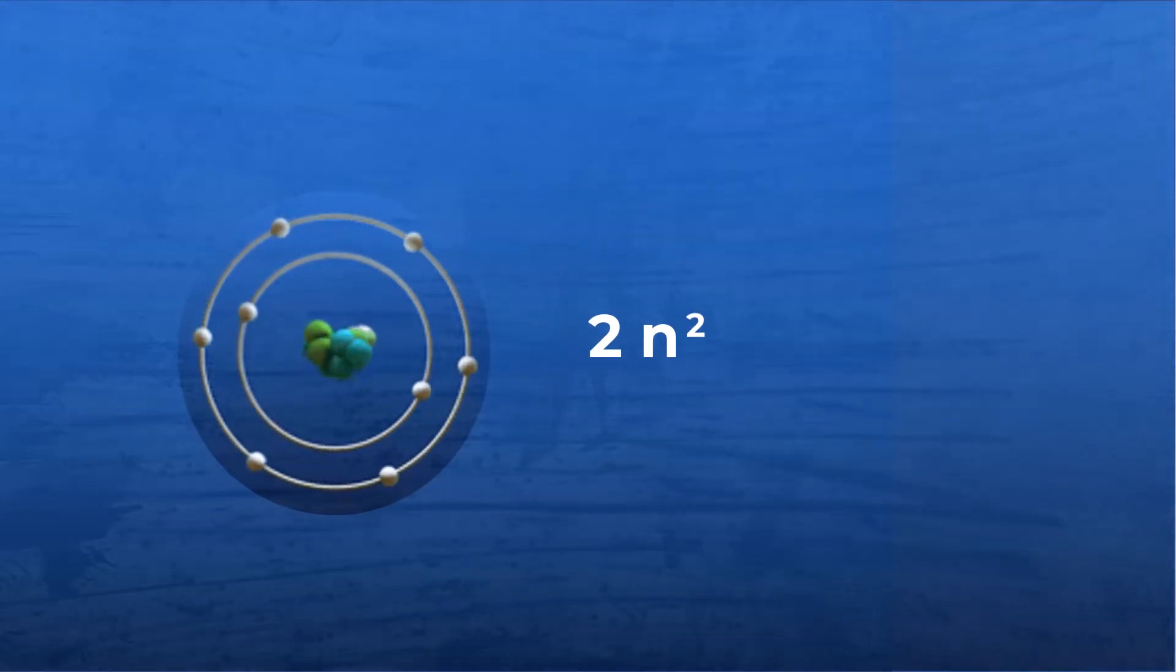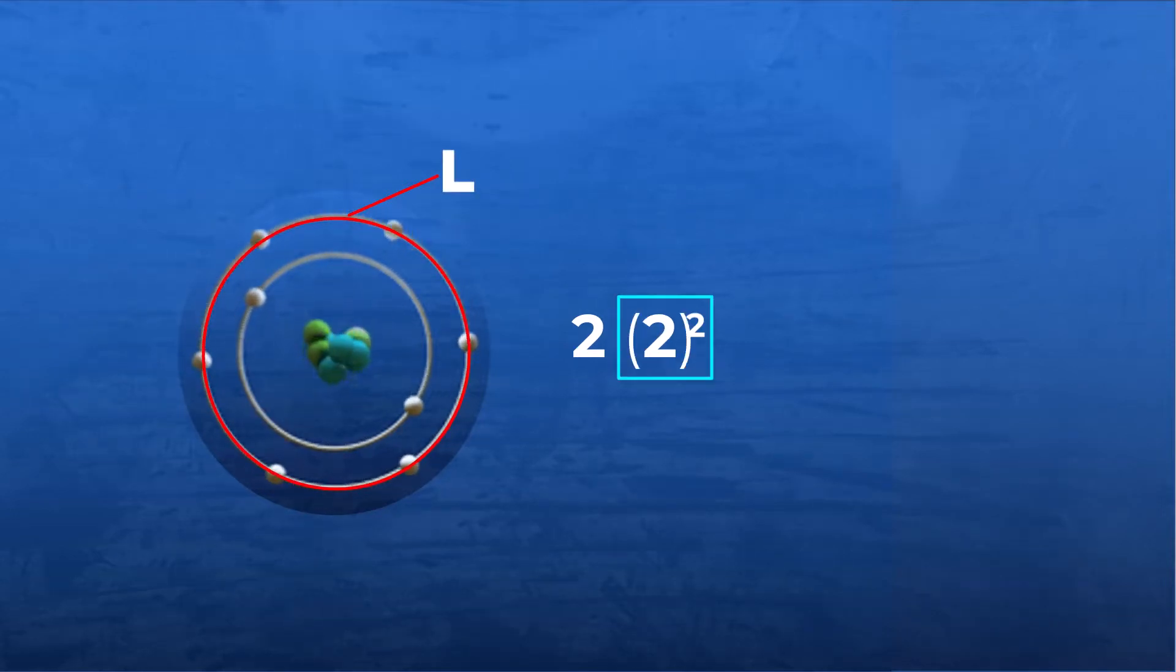The L shell is the second shell with quantum number 2. Therefore, we'll have 2 times 2 squared. 2 squared equals 4. 2 times 4 equals 8.